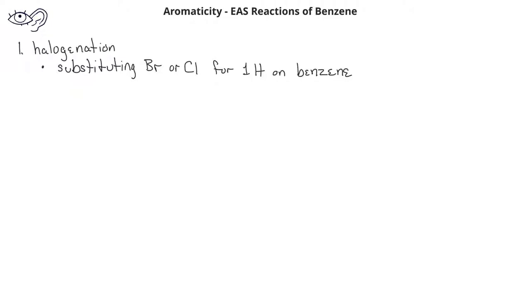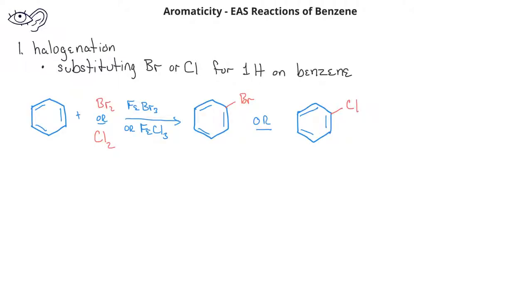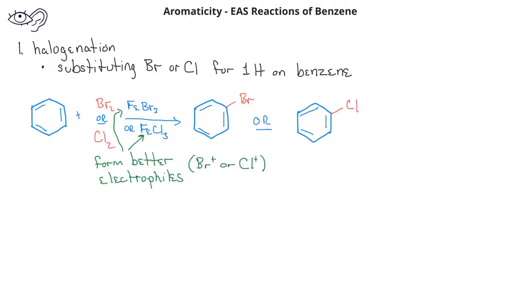The first of these reactions is halogenation of benzene. In these reactions, a halogen atom such as bromine or chlorine is substituted in place of one of the hydrogens on the benzene ring. These reactions will have a benzene combining with Br2 or Cl2, and will use FeBr3 or FeCl3 as a catalyst. The FeBr3 and FeCl3 help to create a suitable electrophile that can add to the benzene ring.